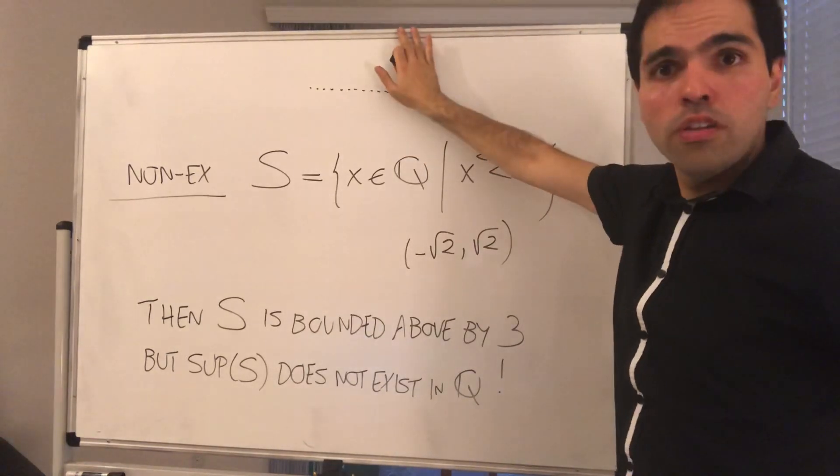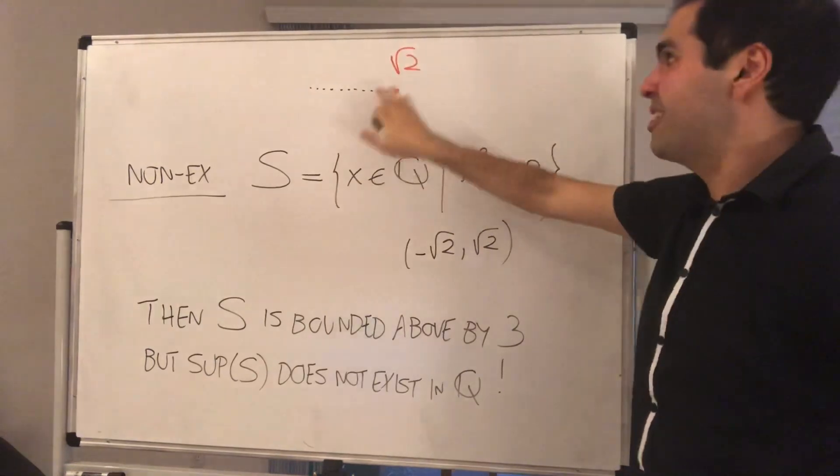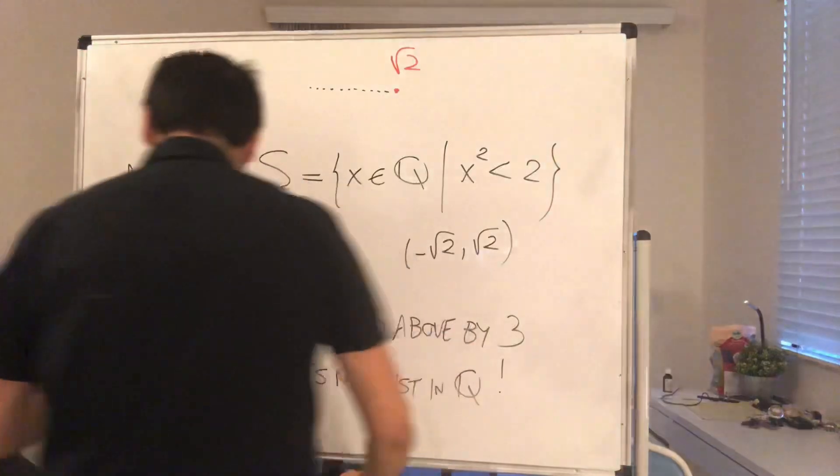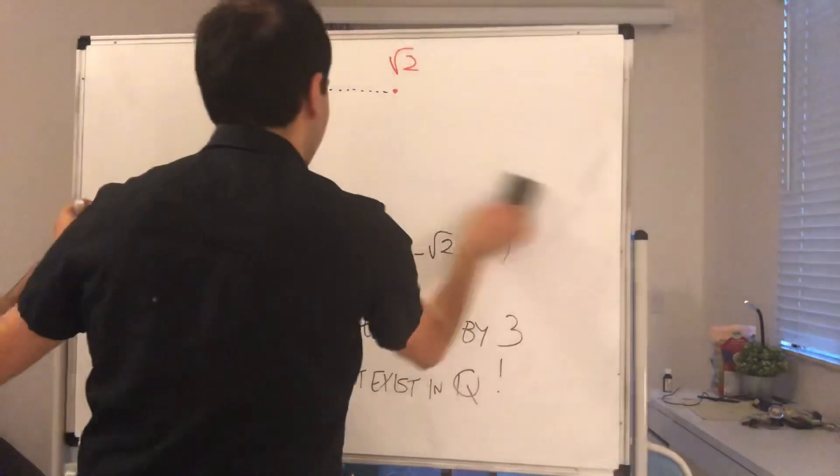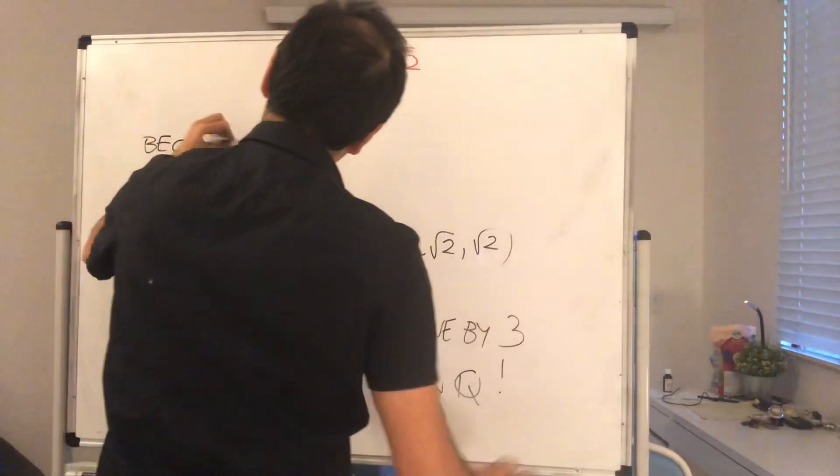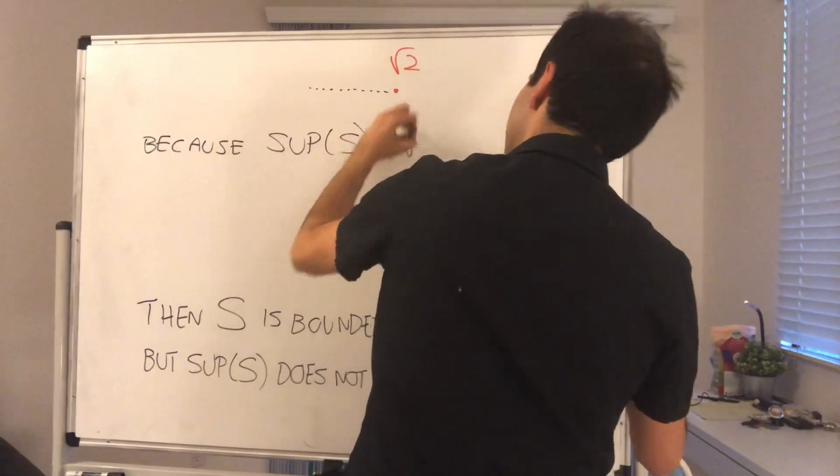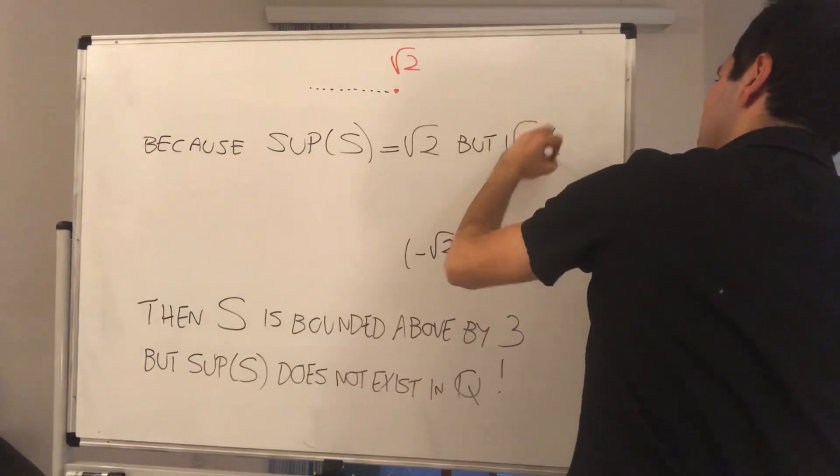So, at least in a rational world, we say, well, there is no supremum, because we don't know what square root of 2 is. And because the supremum of S is square root of 2, but square root of 2 is not a rational number.